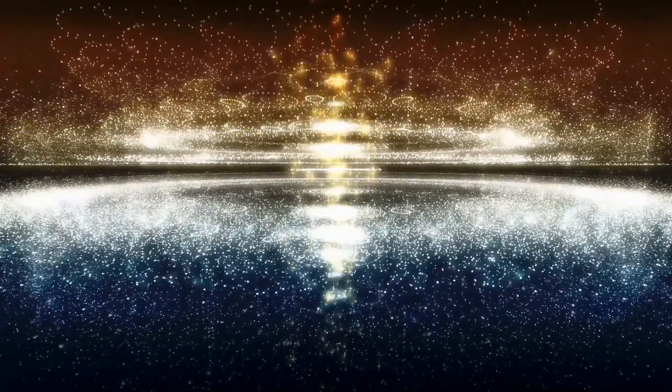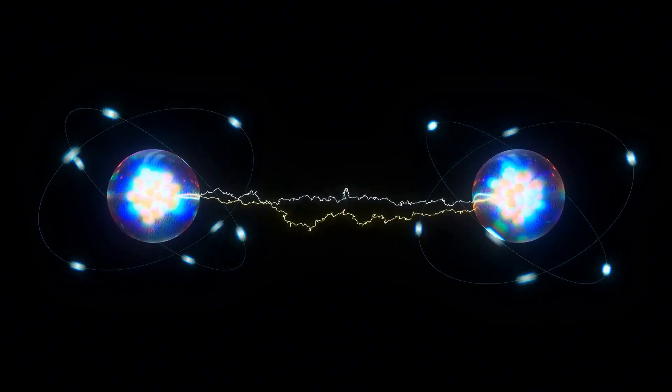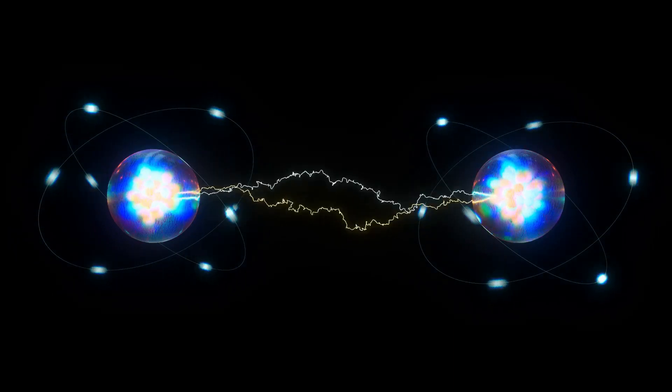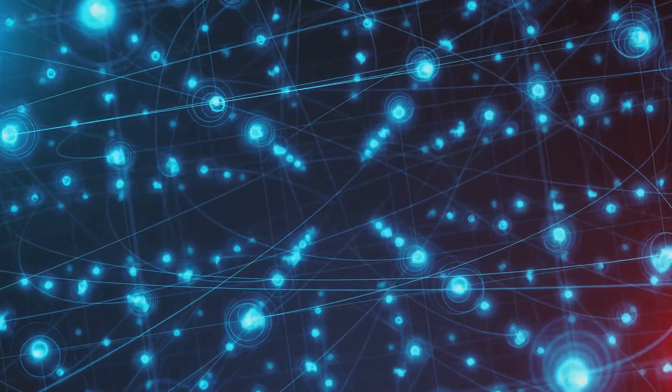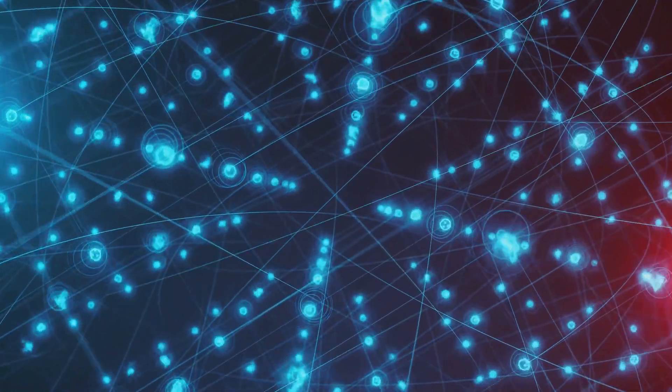Quantum entanglement is one of the most bizarre and counterintuitive phenomena in the quantum world. It occurs when two or more particles become linked in such a way that they share the same fate, no matter how far apart they may be. When you measure the state of one entangled particle, you instantly know the state of the other, even if they are light years away.